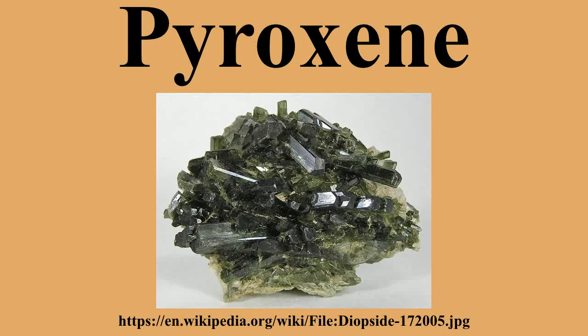The chain silicate structure of the pyroxenes offers much flexibility in the incorporation of various cations, and pyroxene minerals are primarily defined by their chemical composition. Pyroxene minerals are named according to the chemical species occupying the X-site, the Y-site, and the tetrahedral T-site. Cations in the Y-site are closely bound to 6 oxygens in octahedral coordination. Cations in the X-site can be coordinated with 6 to 8 oxygen atoms, depending on the cation size.